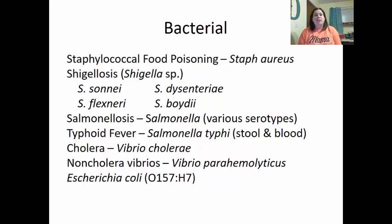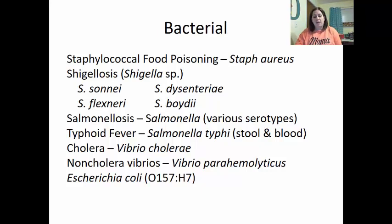On the bacterial side, staphylococcal food poisoning is normally caused by Staph aureus. Shigellosis is caused by Shigella species, of which there are four types. Salmonellosis is caused by various Salmonella serotypes. Typhoid fever is caused by Salmonella typhi, found in blood and stool. Cholera is caused by Vibrio cholerae. Non-cholera vibrios include Vibrio parahemolyticus. And Escherichia coli, specifically the O157:H7 strain, is also an important pathogen.